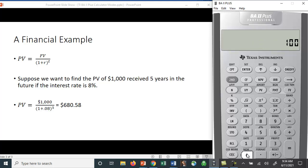I can take 1000 divided by 1.08 raised to the fifth power, and I get the same number: $680.58.